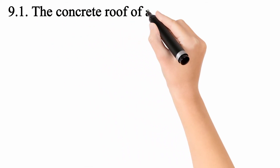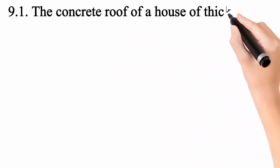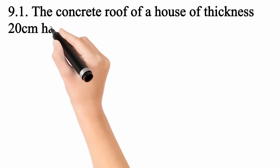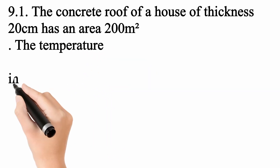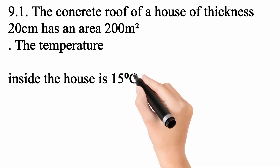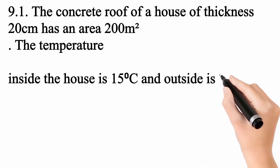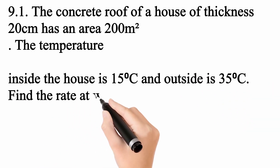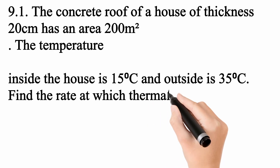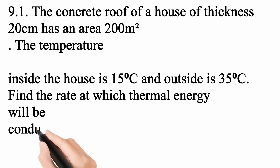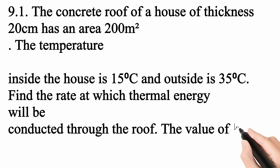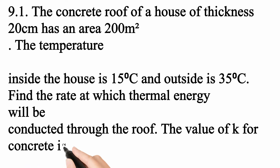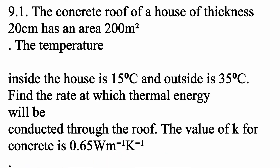Assalamualaikum warahmatullahi wabarakatuh. आज हम Physics class 9 के chapter 9 के दो numericals solve करेंगे। First numerical है: The concrete roof of a house of thickness 20 cm has an area 200 m square. The temperature inside the house is 15°C and outside is 35°C. Find the rate at which thermal energy will be conducted through the roof. The value of k for concrete is 0.65 W per meter per kelvin.